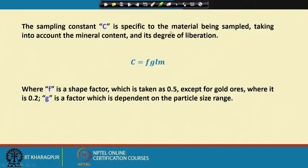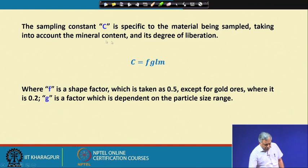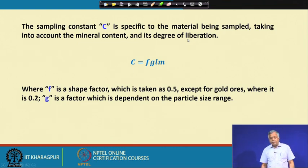Hello, welcome back. We are discussing the Gy's equation. I have briefly explained the meaning of S and S-squared. Now, how do you find capital C, which is the material-specific constant? This constant is specific to the material being sampled and takes into account the mineral content and its degree of liberation, which is very important.